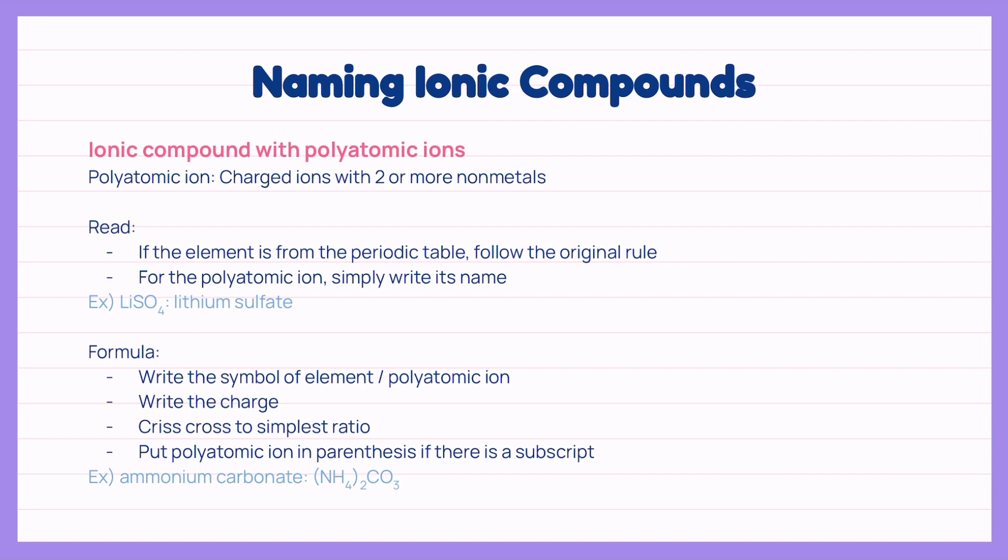Moving on to the ionic compounds with polyatomic ions. Polyatomic ions are charged ions with two or more non-metals. To read the ionic compounds with polyatomic ions, we follow the original rule for the section with the element. For the section with the polyatomic ion, we simply write its name.